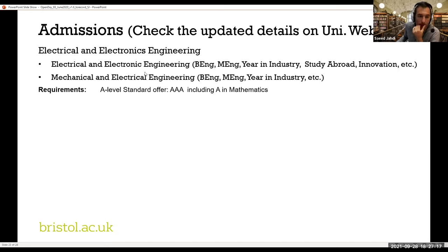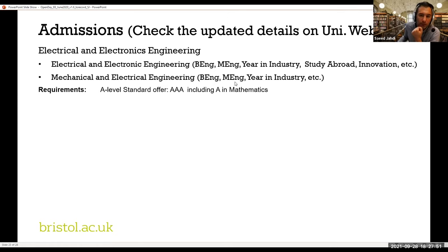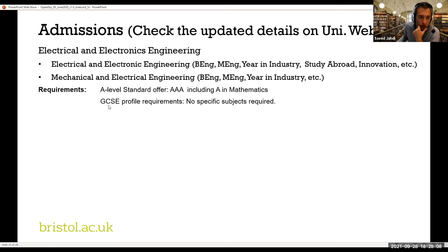We also have a course called mechanical and electrical engineering, which gives you a combination of skills from both electrical and mechanical engineering to go into fields like renewable energy and electric vehicles. Again, you can do it as bachelor's or master's, with year in industry, etc. The requirements for electrical and electronic engineering are typically triple A at A-level, including an A in mathematics. We don't have any specific subjects required for GCSE. In terms of language, you will typically need an IELTS 6.5 with at least 6.0 in all skills.